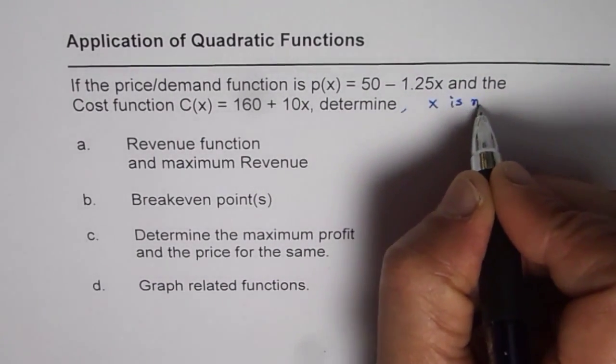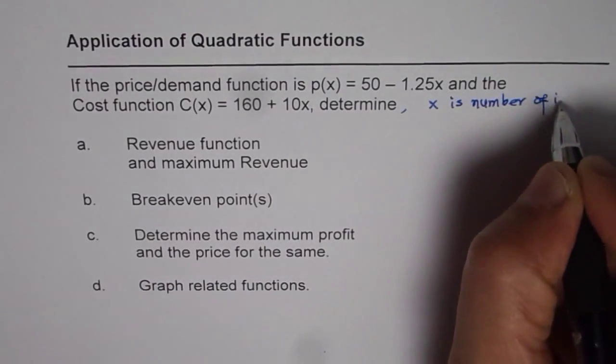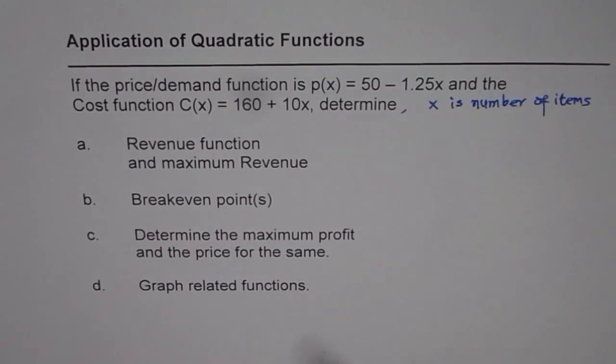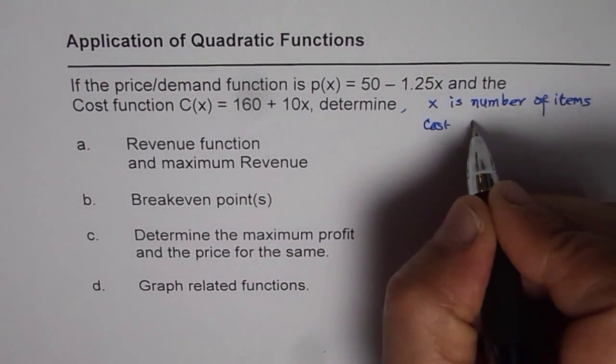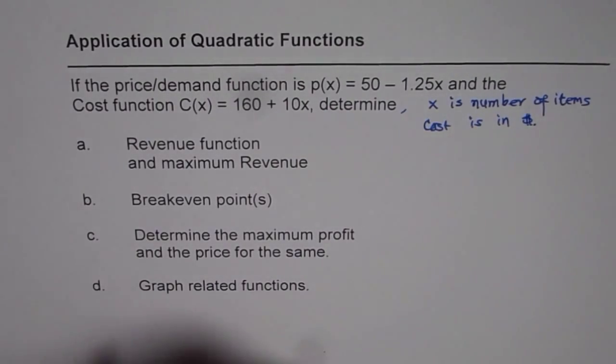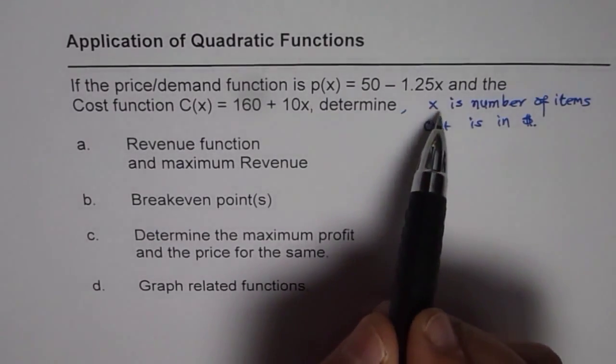Where x is number of items and cost is in dollars. Now revenue will be price times the number of items sold.